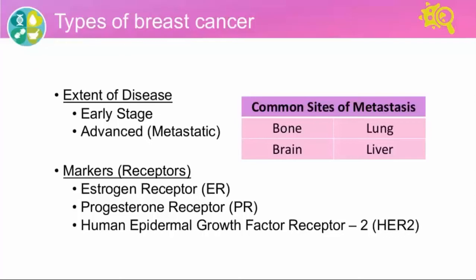This is going to be a little educational part. I want to start by looking at the way we break down breast cancer into different types. Breast cancer can be classified in many different ways — for example, we can describe the way the cells look under the microscope, such as ductal or lobular cancer.